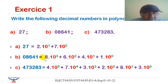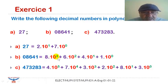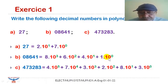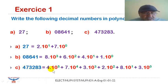For 01641, we have ranks zero, one, two, three — so we have eight multiplied by ten to the power three, plus six multiplied by ten to the power two, plus four multiplied by ten to the power one, and finally plus one multiplied by ten to the power zero. For the last number, we use the same method.